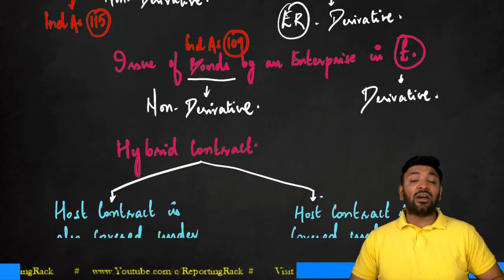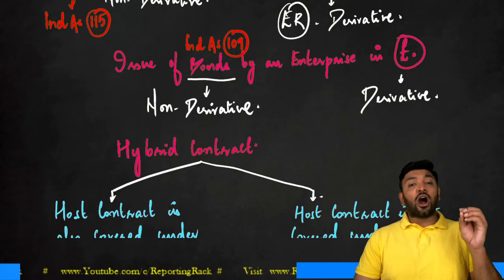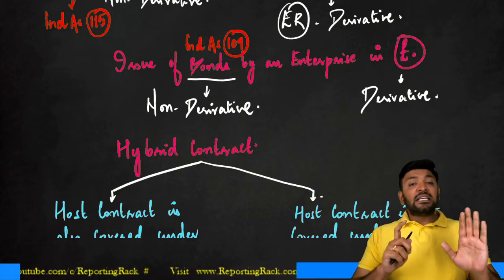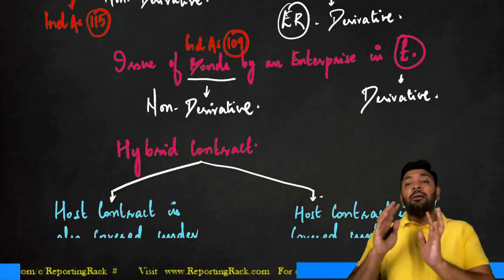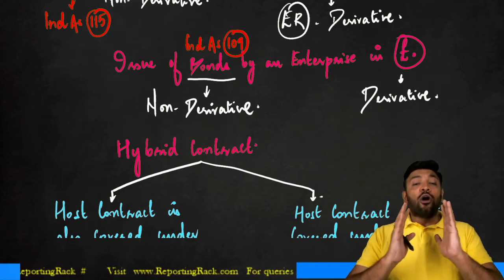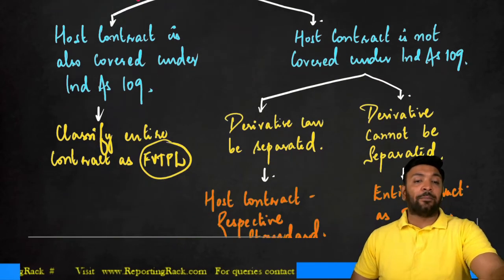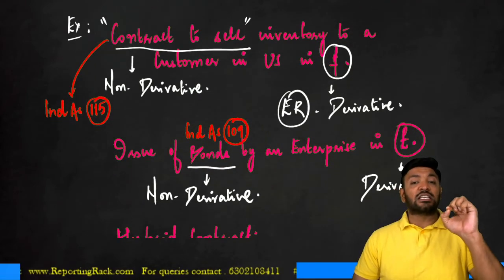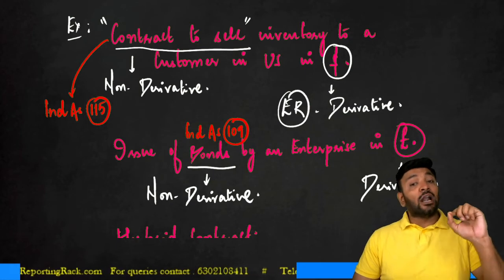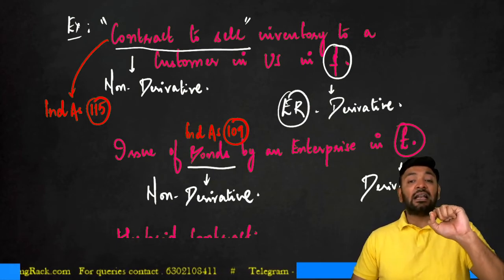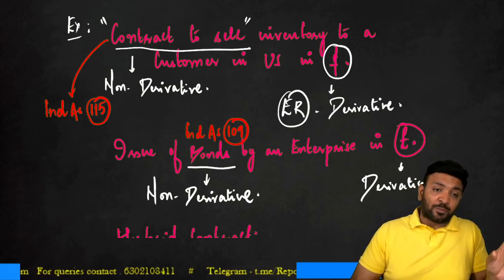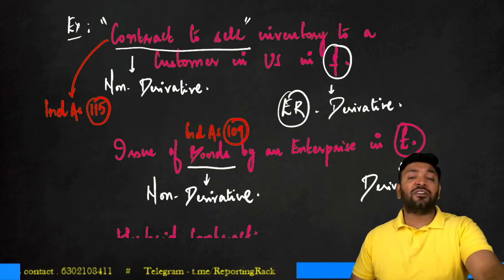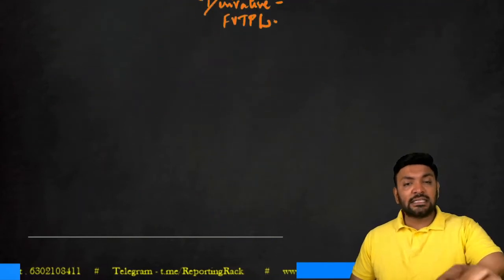In the second case, where bonds are issued in pounds — a non-derivative host contract with an embedded derivative of the pound — since bonds are covered under Ind AS 109, both combined should always be treated as FTPL. But for the first case, a contract to sell inventory in US dollars — a non-derivative host contract where the exchange rate is a derivative — the contract to sell should be as per Ind AS 115 and the dollar derivative should be classified as FTPL.